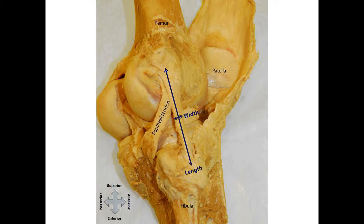The mean length and width of all Fibular Collateral Ligaments was 48 and 4 mm respectively. The mean proximal and distal attachments to articular surface of all Fibular Collateral Ligaments was 22 and 25 mm respectively. We found a direct relationship between the proximal and distal attachment distances to articular surface distances, Spearman rho 0.527 with a p-value of 0.002, and this association was independent of age and sex.